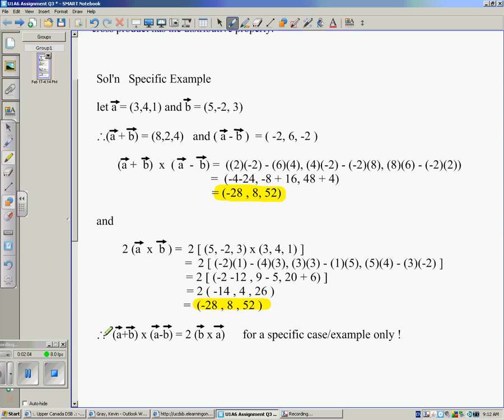So we can make a statement that yes indeed, this distributed property on the cross product may in fact work for only a specific case for now. But certainly when you use one example of a vector, you have this to be shown, again, using a specific case.